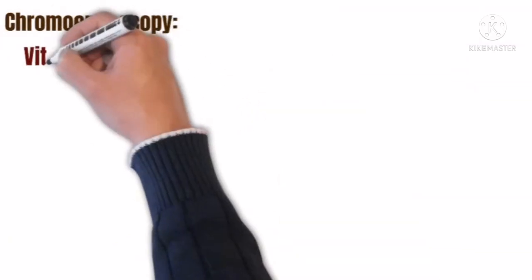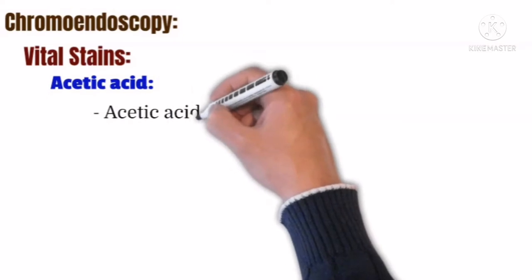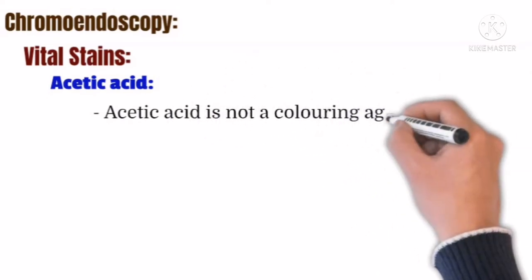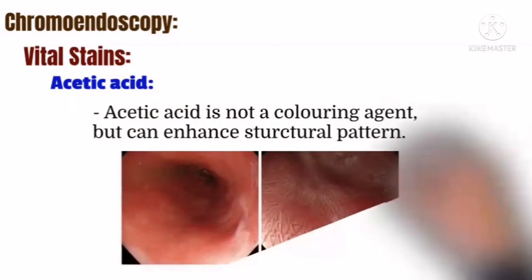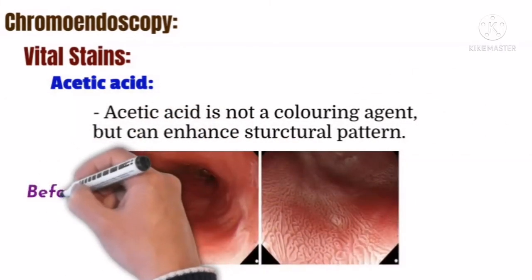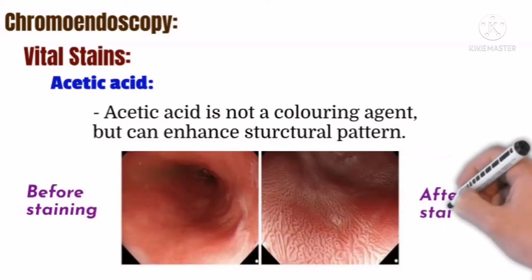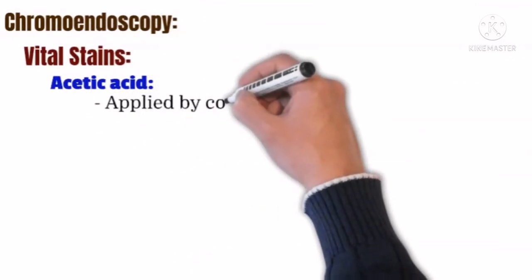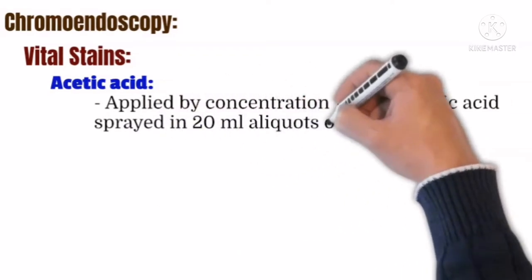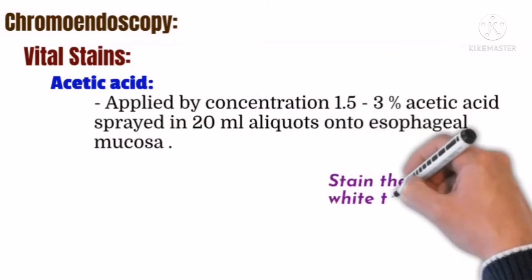Vital stains include acetic acid. Acetic acid is not a coloring agent, but can enhance structural pattern. This slide shows mucosa before staining and after staining with acetic acid. Acetic acid is applied at a concentration of 1.5 to 3% and is sprayed in 20 ml aliquots onto the esophageal mucosa.